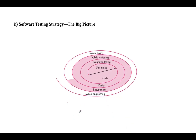Next is the software testing strategy. If you observe this image, it is in the form of a spiral. Unit testing is at the vertex of the spiral, so unit testing begins at the vertex. It mainly concentrates on each unit — a unit can be a component used in the code or a class written inside the code.